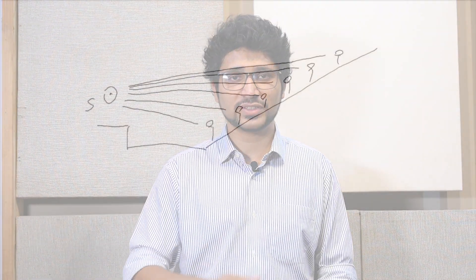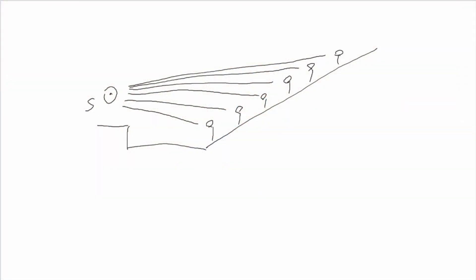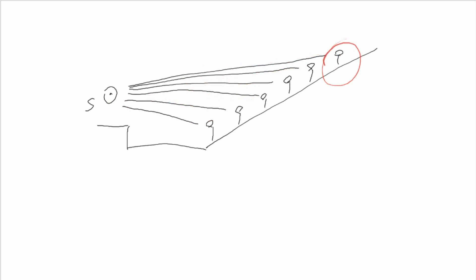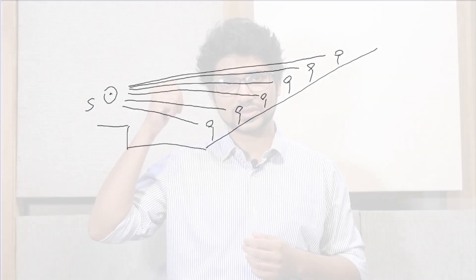It is almost taken for granted that an auditorium will have a sloping floor. It is intuitive to think why the slope exists. The first thing that comes to mind is the sight lines, which make it possible for people sitting in the farther rows to have decent visibility of the stage.